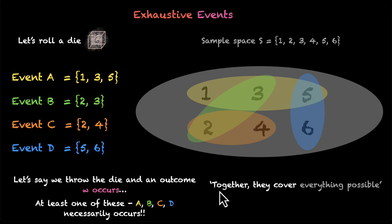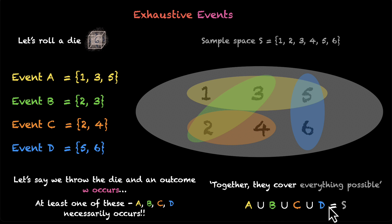We can say this with confidence because together they cover everything possible. In set notation, we can say that A union B union C union D — which is the union of all 4 of these sets — is the entire sample space. This is what we mean by exhaustive events. The word 'exhaustive' is used because together all 4 of them have exhausted the entire sample space; they have exhausted all possible options.